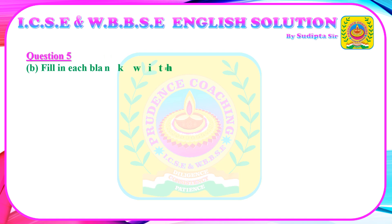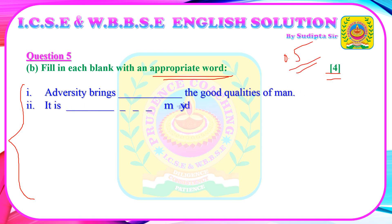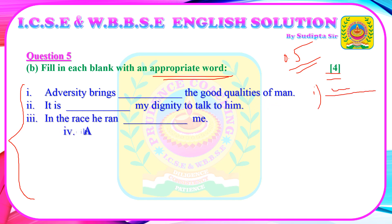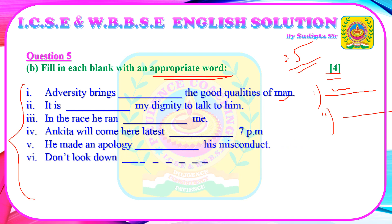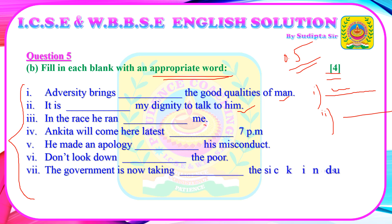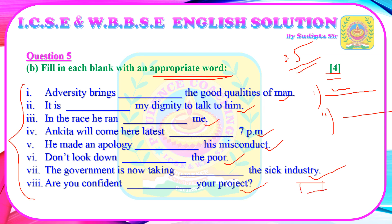Question 5B: Fill in each blank with an appropriate word — specifically prepositions. There are 8 blanks worth 4 marks total (0.5 marks each). Write only the question numbers and answers without copying the passage. The sentences are: 1) Adversity brings ___ the good qualities of man. 2) It is ___ my dignity to talk to him. 3) In the race he ran ___ me. 4) Ankita will come here latest ___ 7pm. 5) He made an apology ___ his misconduct. 6) Don't look down ___ the poor. 7) The government is now taking ___ the sick industries. 8) Are you confident ___ your project? Write your answers in the comment box below.